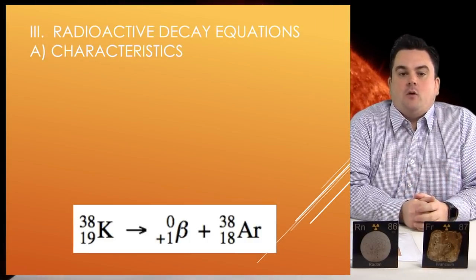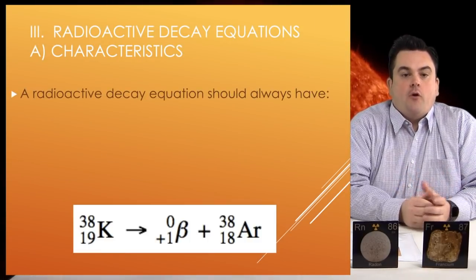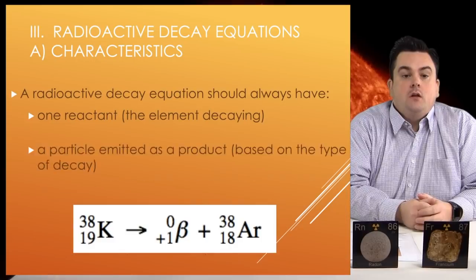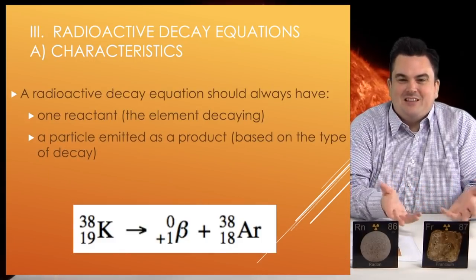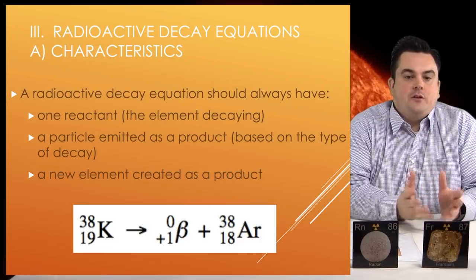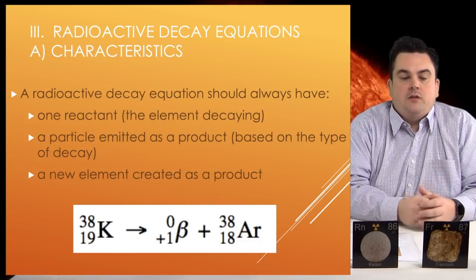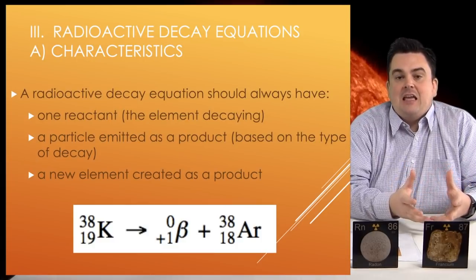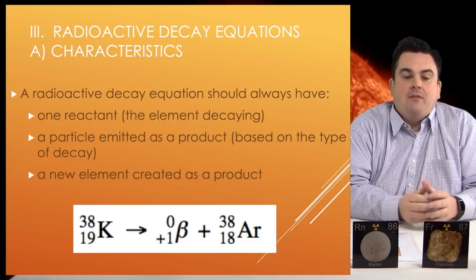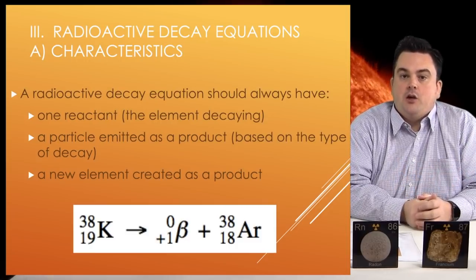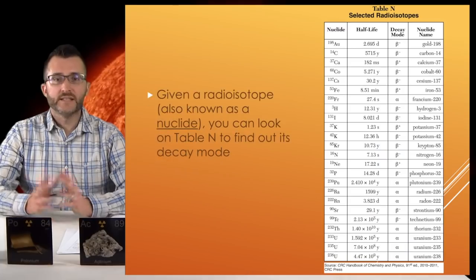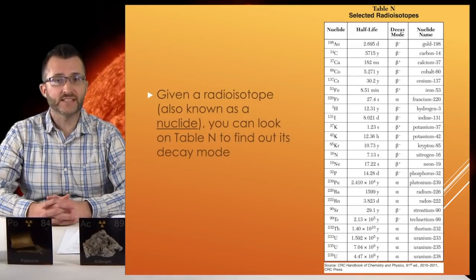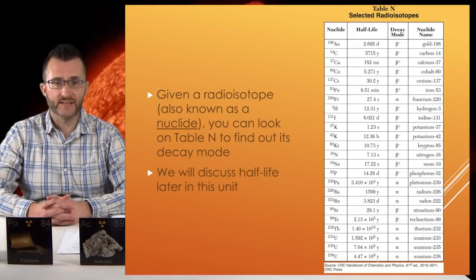Radioactive decay equations — let's talk about characteristics. A radioactive decay equation should always have: one reactant (the element decaying), a particle emitted as a product based on the type of decay, and a new element created as a product. For example, potassium on the left is our reactant — it decays giving off a positron, and that nucleus becomes an argon atom, a new element. Given a radioisotope, also known as a nuclide, you can look on Table N to find out its decay mode. We will discuss half-life later in this unit.